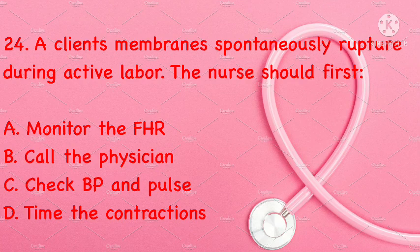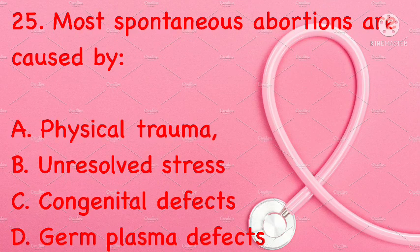A client's membranes spontaneously ruptured during active labor. The nurse should first: monitor the FHR, call the physician, check BP and pulse, or time the contractions. Correct answer is A: monitor the FHR.